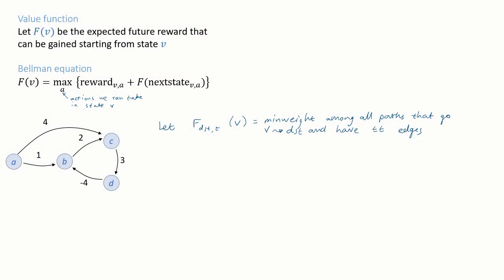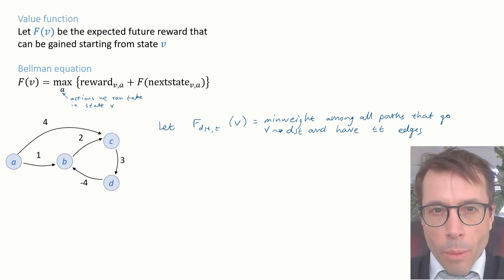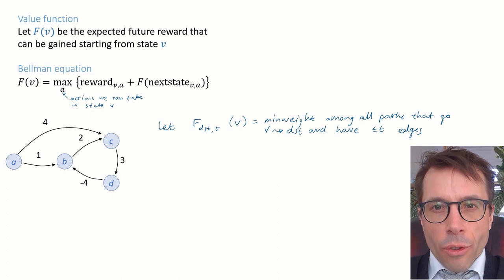So how should we apply this equation to graphs? What should the states be? What are the actions and what are the rewards? There's a magic leap of creativity that's needed here. It's one of the sparks of real cleverness to do what Bellman did and reconceptualize the problem. Let me propose a function. Let's define f sub destination comma t of v to be the minimum weight among all paths that go from v to the destination and that have less than or equal to t edges.